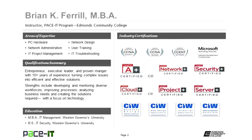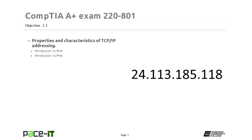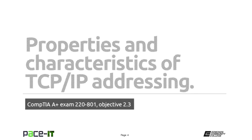You are probably wondering what exam objective 2.3 of the 220-801 exam is. It is titled Properties and Characteristics of TCP IP Addressing. So with that, let's go ahead and jump into TCP IP Addressing.